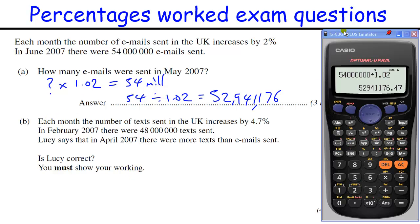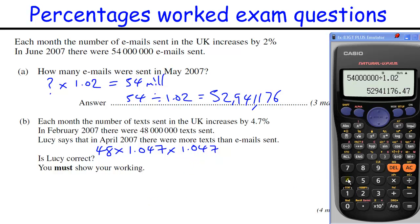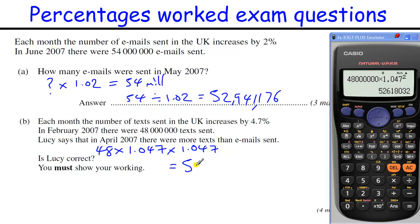In part B, worth 4 marks, we need to find the number of texts in April. In February it's 48 million, so to get to April we need to times by the increase, which is 1.047, because we're trying to find 104.7%. That's to get from February to March, then times by 1.047 again to get to April. So 48 million times by 1.047 squared gives me 52,618,032. Be very careful writing big numbers down — check it carefully.